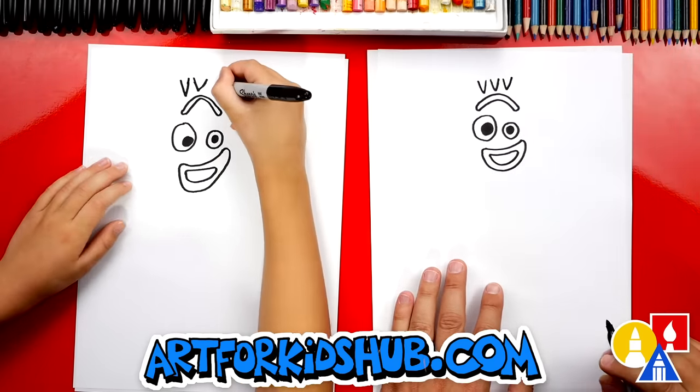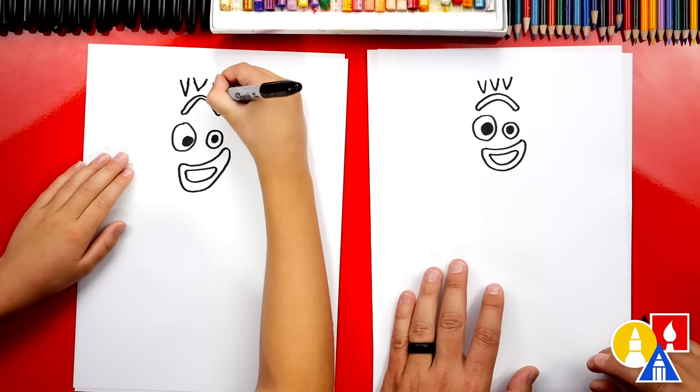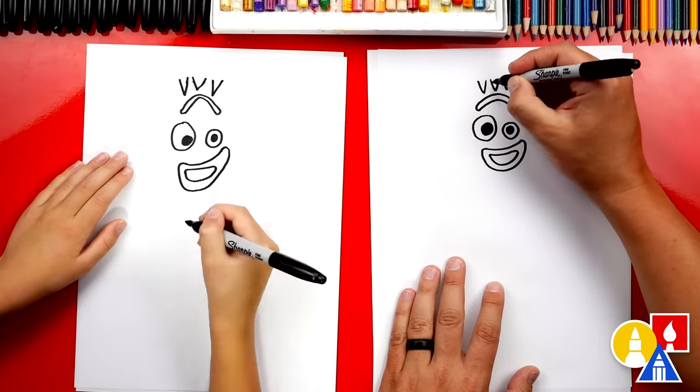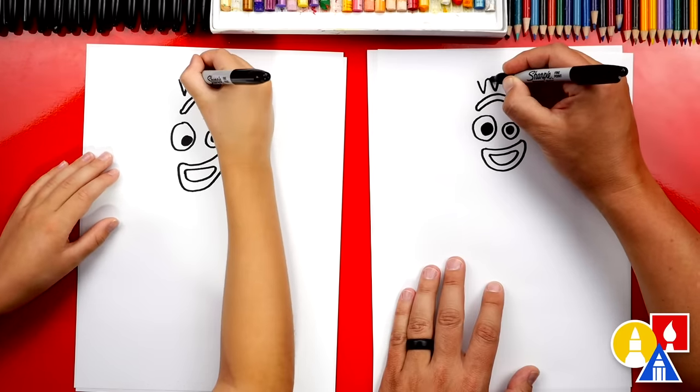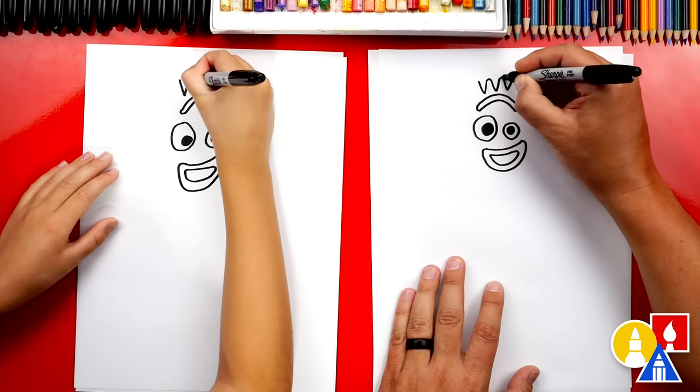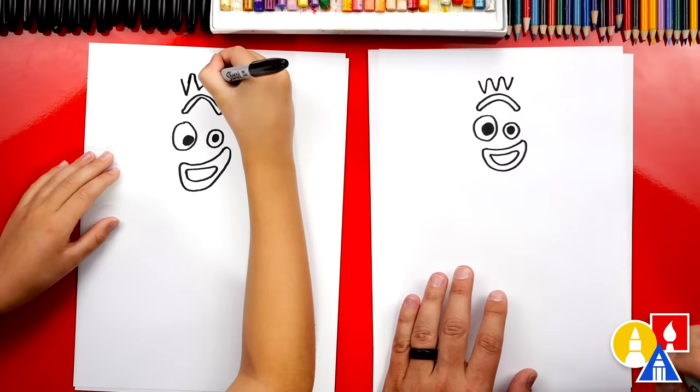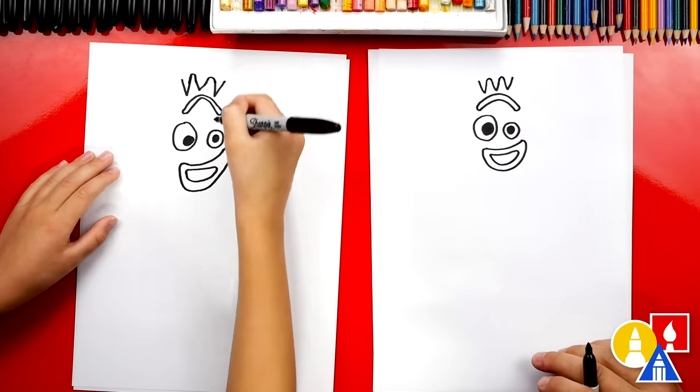Then let's connect these V's together at the top. We're going to draw a little curve to draw the end of the spork, the fork part of the spoon.